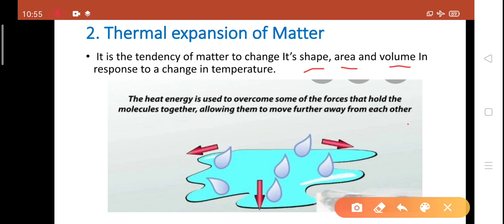Look at this diagram. The heat energy is used to overcome some of the forces that hold the molecules together, allowing them to move further away from each other. It means in this diagram, you can see the molecules are present in a limited space. But as the heat is applied, they try to move away from each other, breaking the boundary and changing their state.